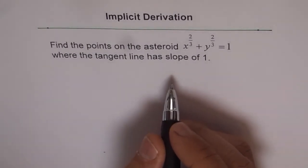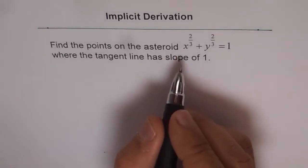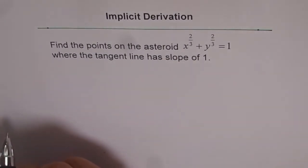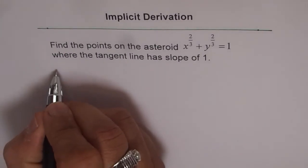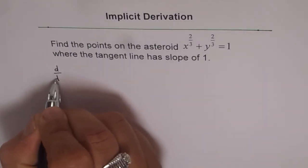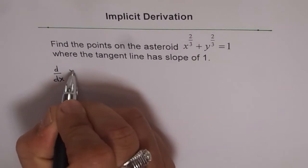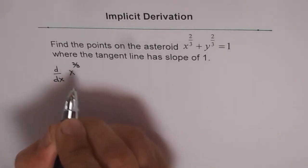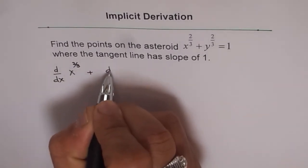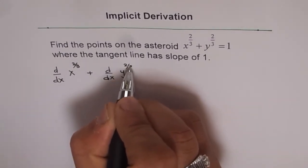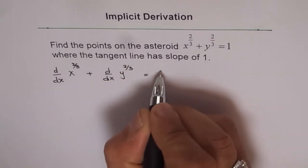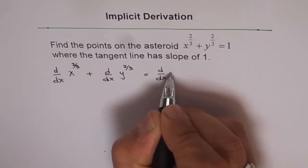So the equation before us is x to the power of two over three plus y to the power of two over three equals one. Let's take the derivative on both sides with respect to x. We get d/dx of x to the power of two over three, plus d/dx of y to the power of two over three, equals d/dx of one.